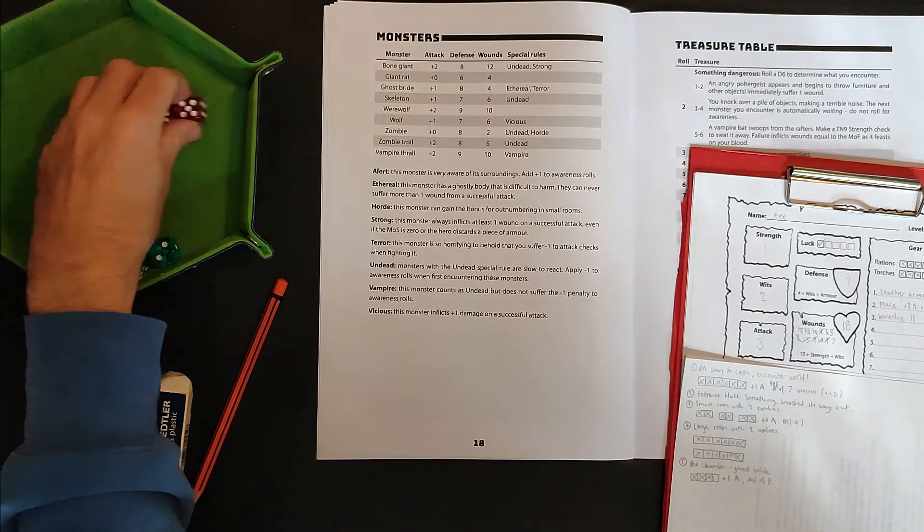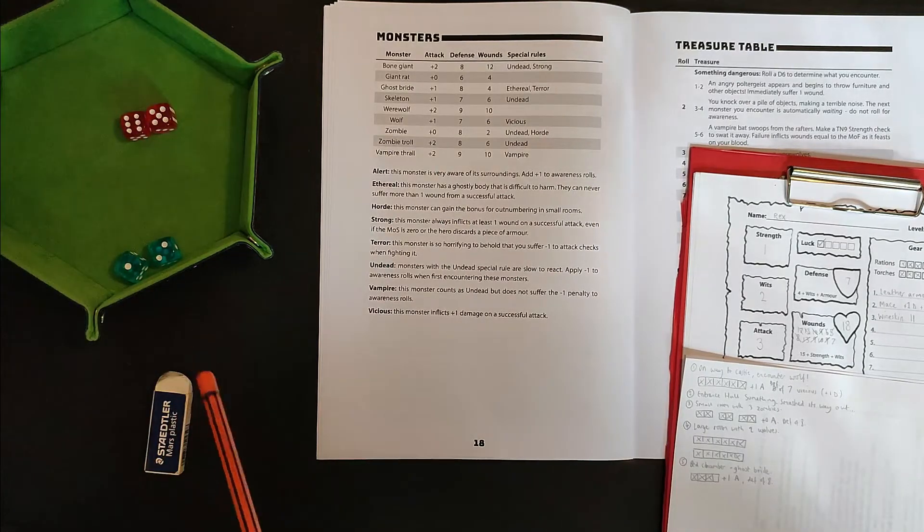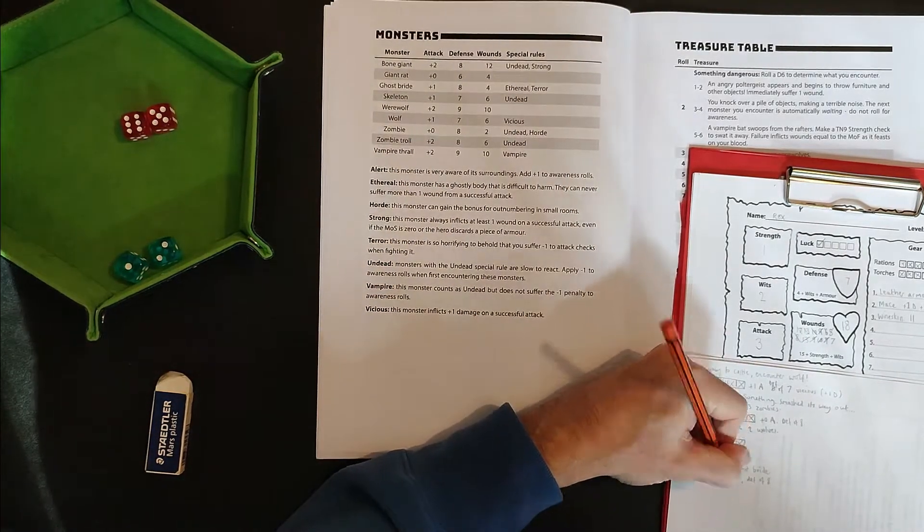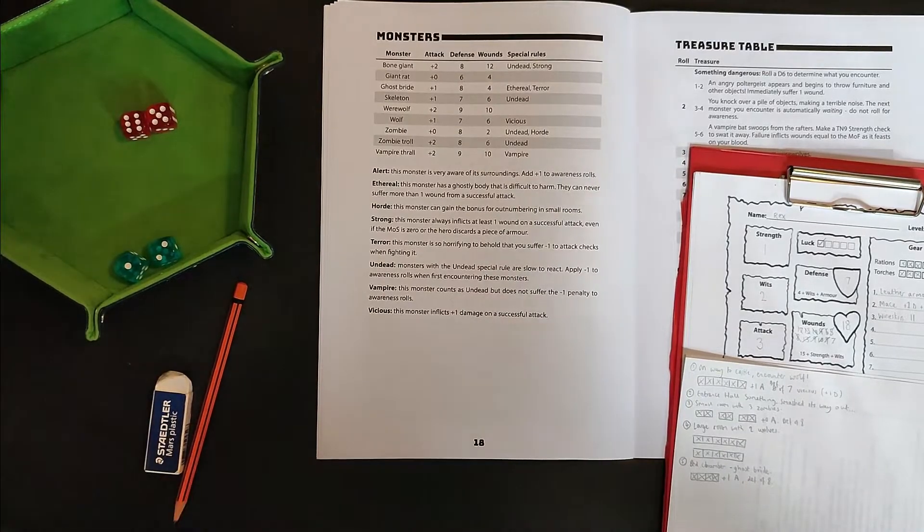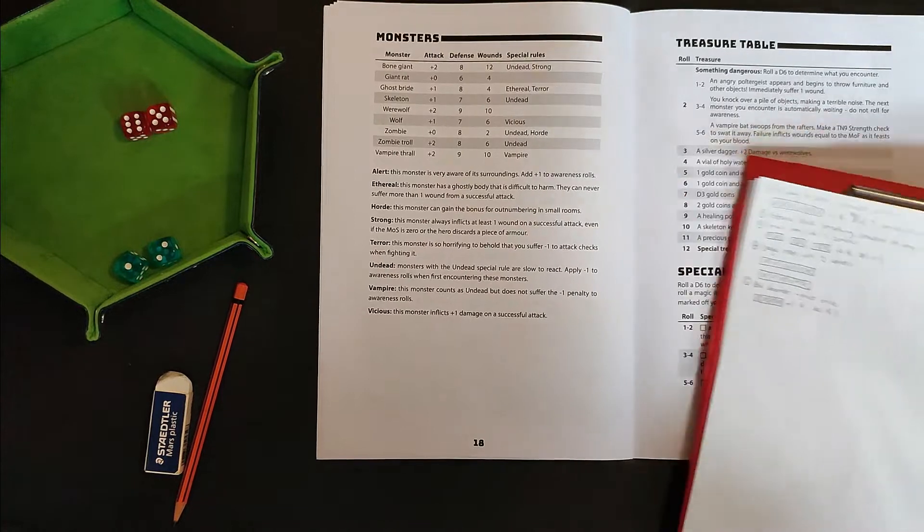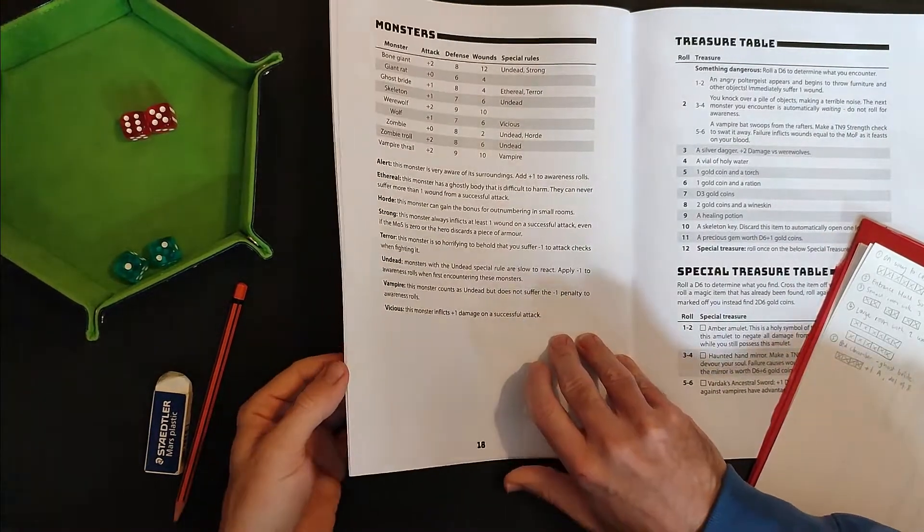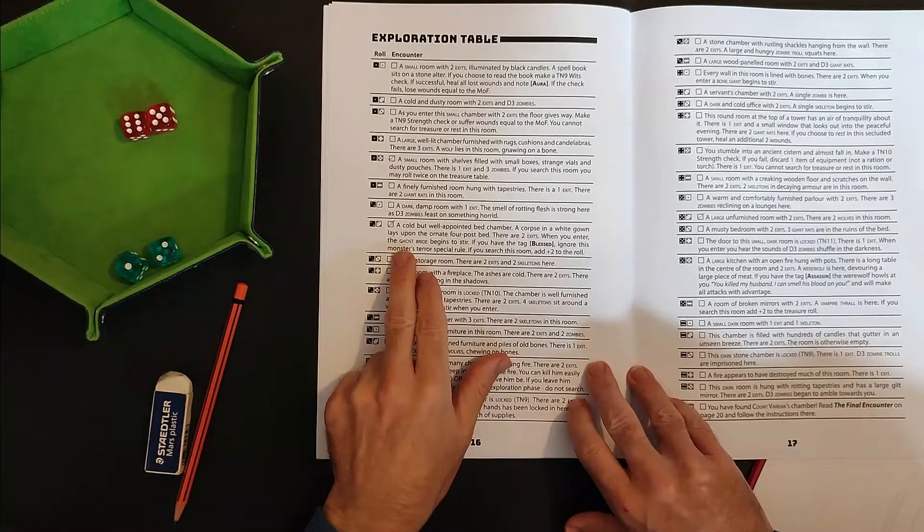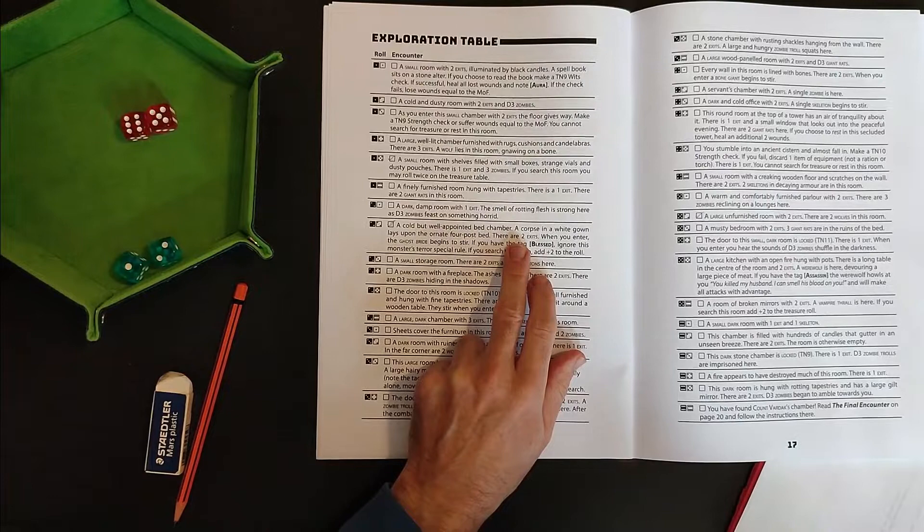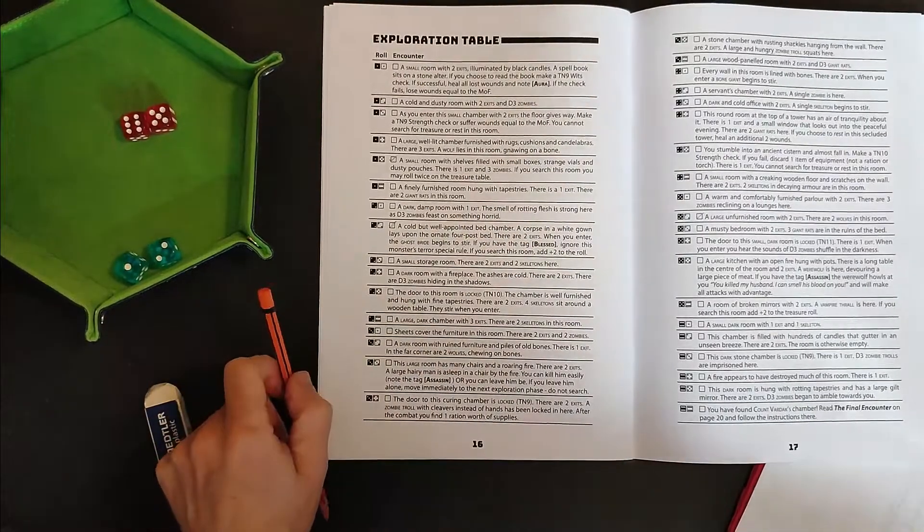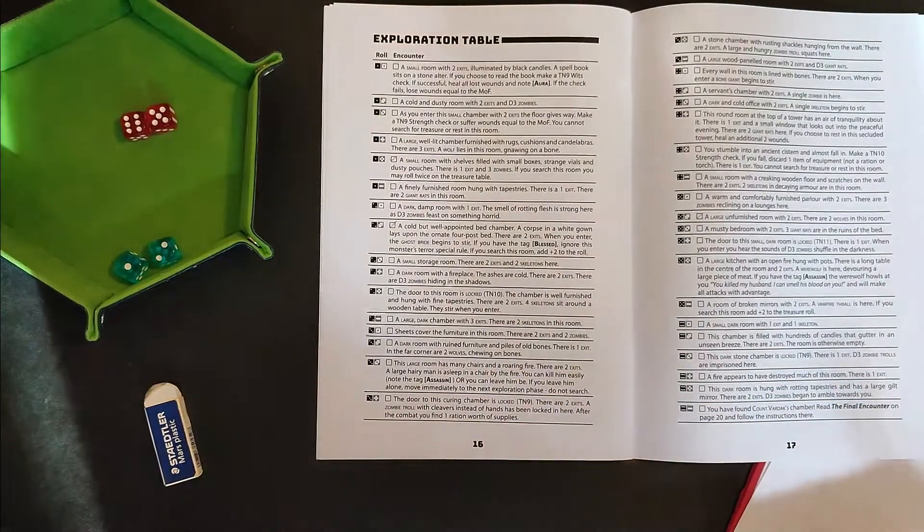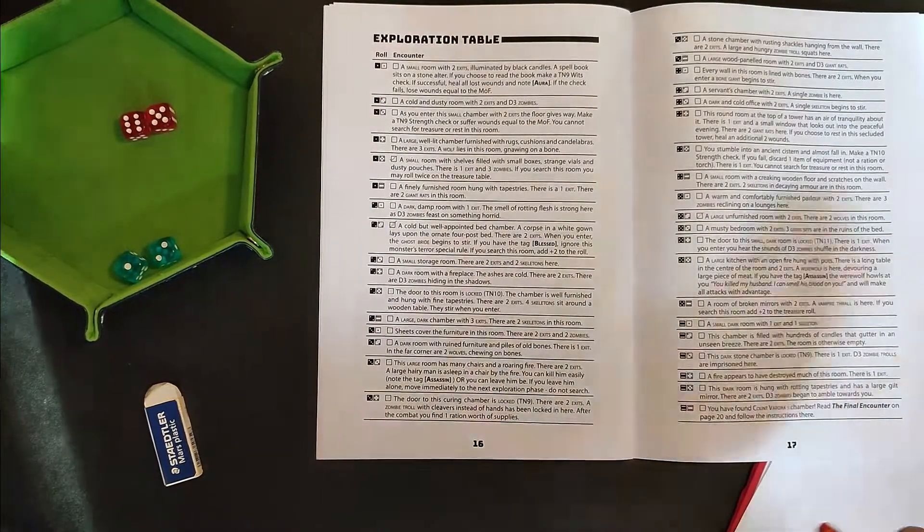Oh, wow. I mean, that is some lucky rolling. It's got to be said. So that's easily enough to do the final point of damage to the ghost bride, killing her or vanquishing her, I guess, because presumably she's already dead. So just looking back at the room. Oh, there's two exits, two exits out of this room. I need to just add an additional exit next to the bed.